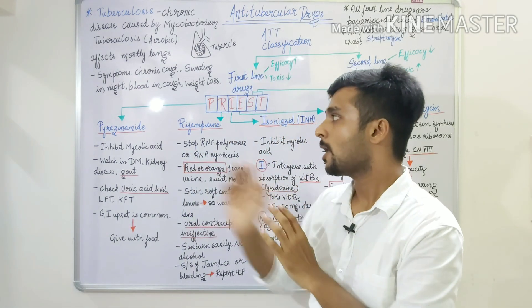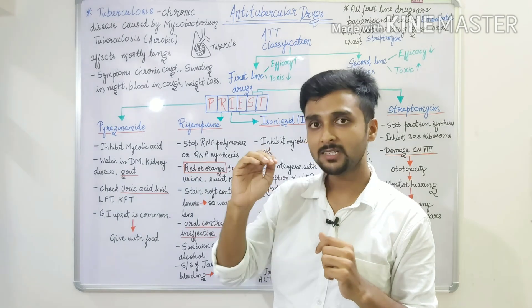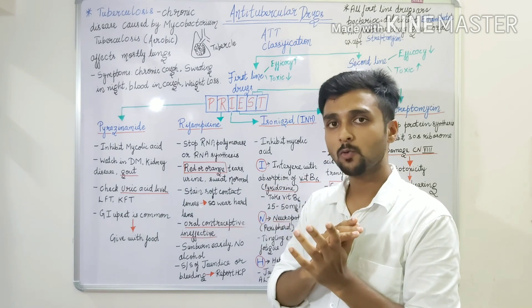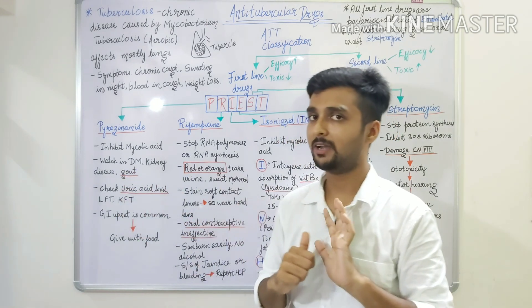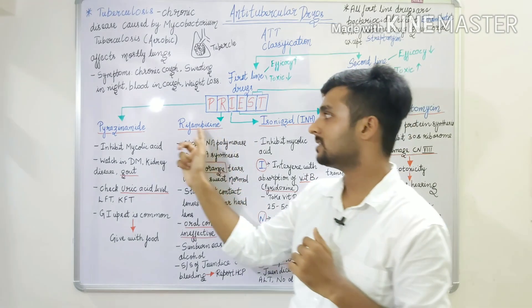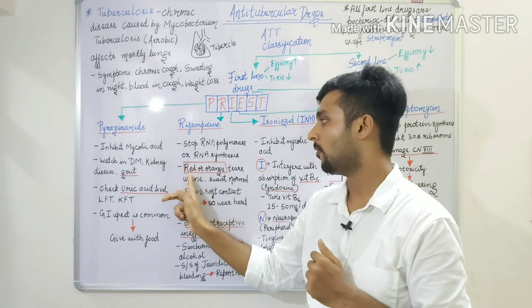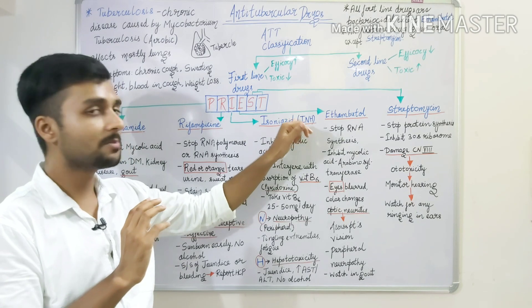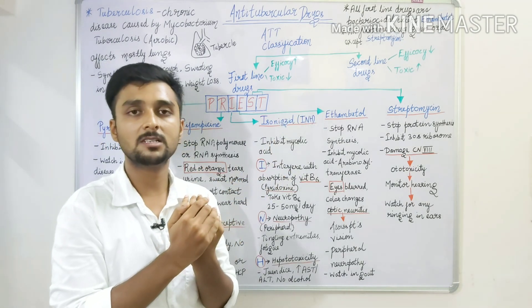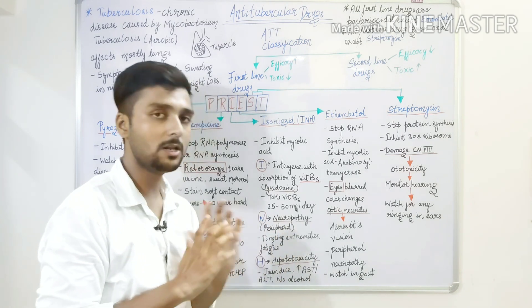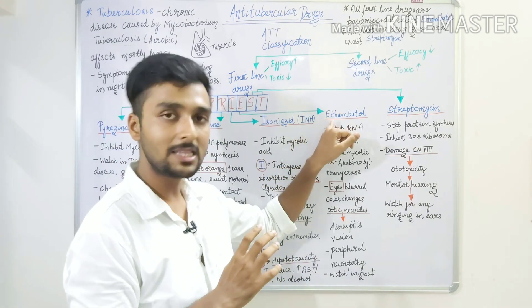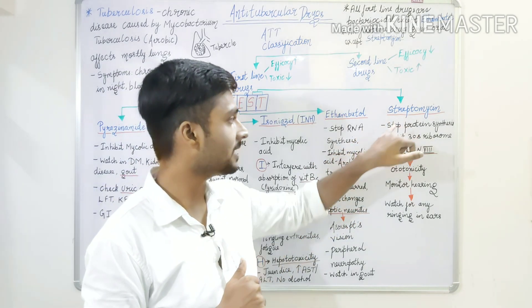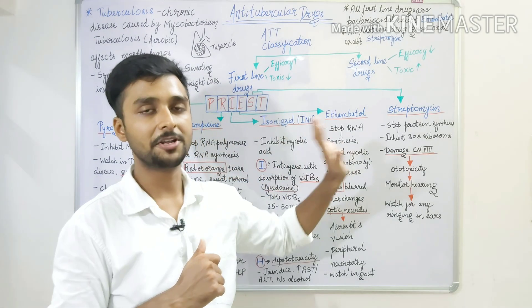Now for side effects, to remember: Pyrazinamide - stairs, when stairs are up, you will get pain in the joints. If it gets pain, it's related to gout and uric acid level, check it. Rifampicin starts with R - R for red and orange secretions that can stain soft lenses. Isoniazid - INH: I inhibits B6 absorption, N for neuropathy, H for hepatotoxicity. E for Ethambutol - E for eyes blurring and color changes. Last is Streptomycin - damages cranial nerve 8, monitor hearing.